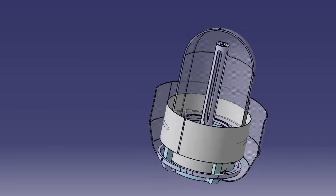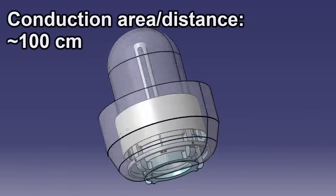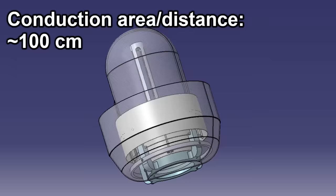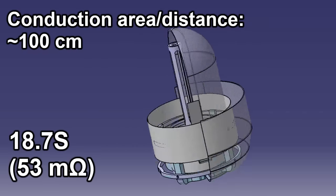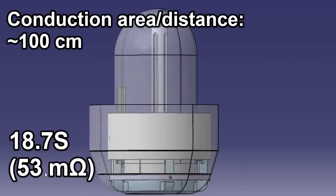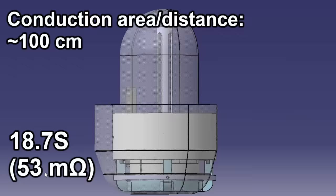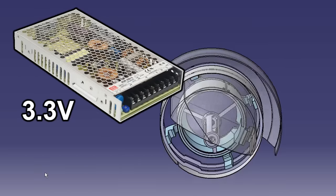Based on my CAD design, I expected to have nearly 100 centimeters of conduction area, so at 5% sodium hydroxide, that would result in 18.7 siemens, or 53 milliohms. However, with the glass bell blocking part of the path, that number would be a little bit lower.